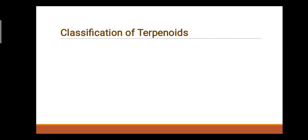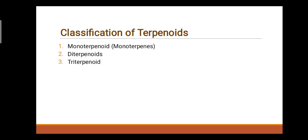Next point: Classification of Terpenoids. Terpenoids are classified as: first, Monoterpenoids (Monoterpenes); second, Diterpenoids; third, Triterpenoids; fourth, Tetraterpenoids; fifth, Sesquiterpenoids; and sixth, Polyterpenoids. We will discuss each one by one.